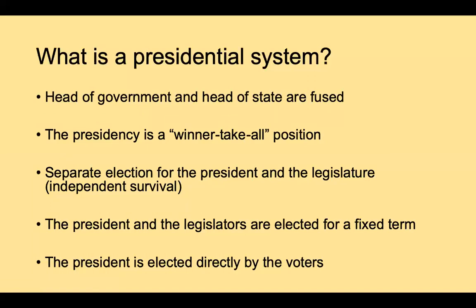Independent election and independent survival are the key features. But note that independent election means there's a potential for gridlock if there's less accountability between the legislature and the president. If the president doesn't have to be concerned about a vote of no confidence or the loss of legislative majority support, the president and legislature may be more likely to butt heads and disagree, potentially resulting in gridlock. This is a consideration in the Juan Linz reading for today's class.